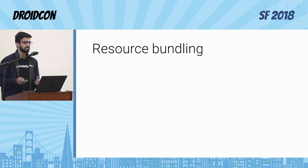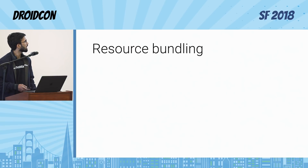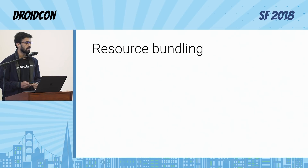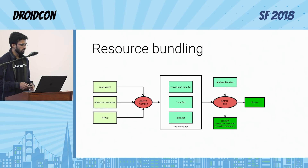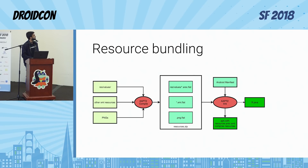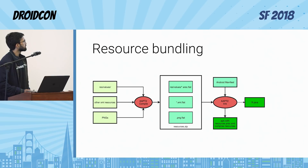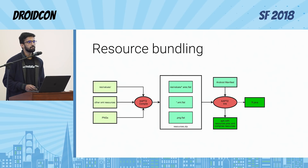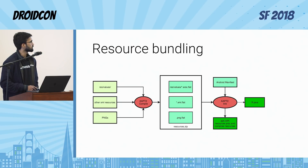Resources are everything present in the resource folder of an Android project, along with the Android Manifest. Resource bundling is handled by the Android Asset Packaging Tool, AAPT2, which does this in two steps: compilation and linking. In the compilation phase, AAPT2 takes resources and gives us an intermediary representation — a zip file. Resource values become a resource table with the .arsc.flat extension, XML resources become .xml.flat files, and PNGs are converted to .png.flat — a compressed version.